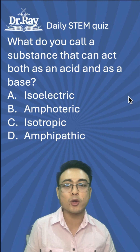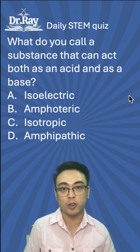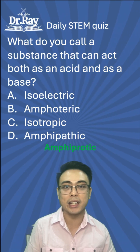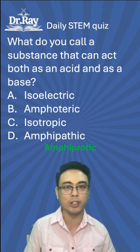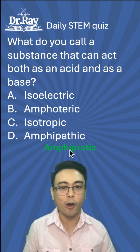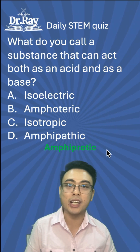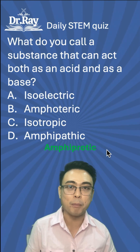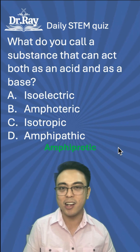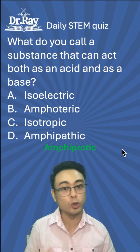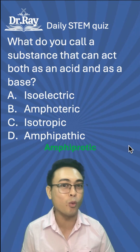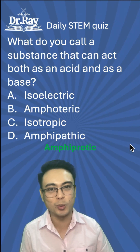There's actually a subset of amphoteric substances called amphiprotic substances, and this is based on the Bronsted-Lowry definition of acids and bases. According to that definition, an acid is a proton donor, while a base is a proton acceptor, and a substance that can do both is called amphiprotic. A common example is water — it can do both.